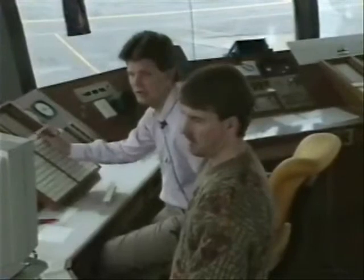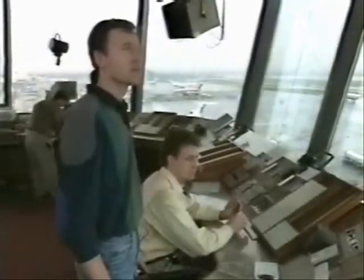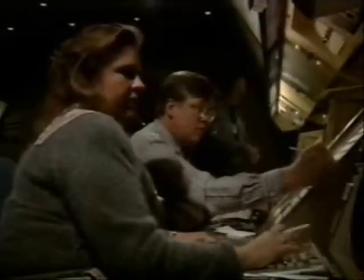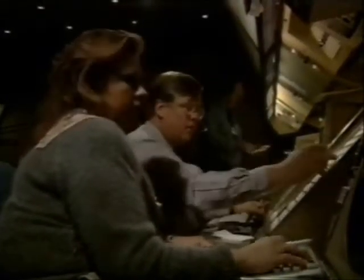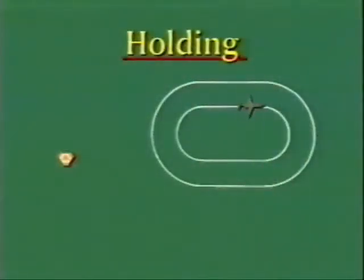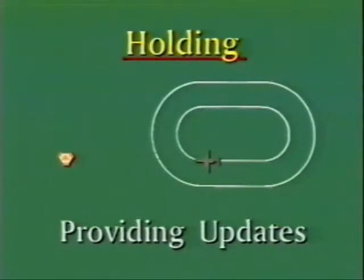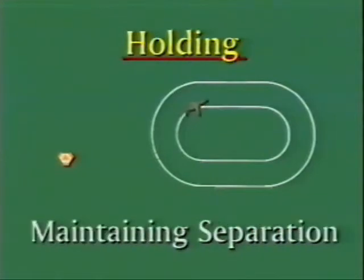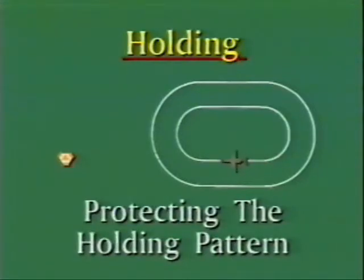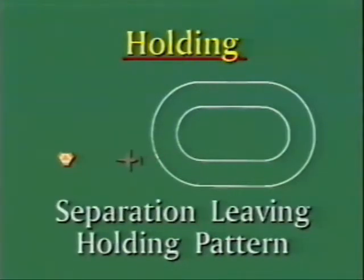Holding aircraft is an air traffic control procedure used to achieve safe spacing, to allow aircraft to wait for accommodations at an airport, or to comply with traffic management requirements necessitated by traffic congestion, weather conditions, or other conditions. When holding traffic, controllers must be concerned with separation as the aircraft enter, fly, and leave the holding pattern. Controller responsibilities when holding traffic include clearing the aircraft to and from the holding fix, providing information updates about the hold and related delays, maintaining separation between all aircraft entering the holding pattern, protecting the holding pattern airspace, and providing separation for aircraft as they leave the holding pattern.